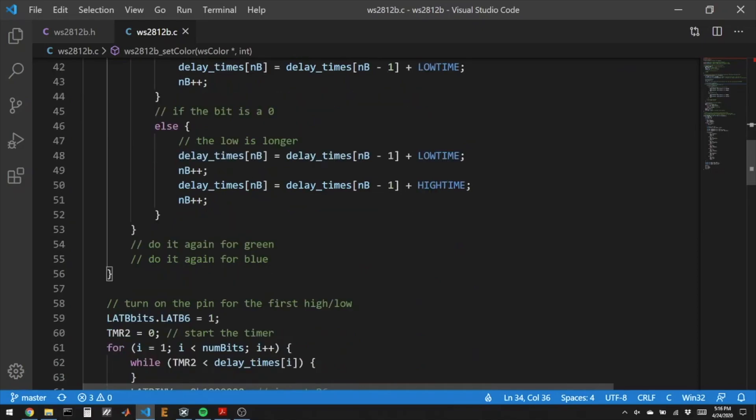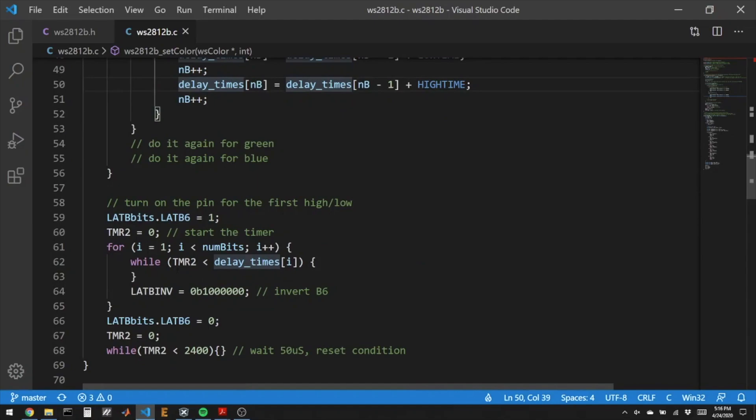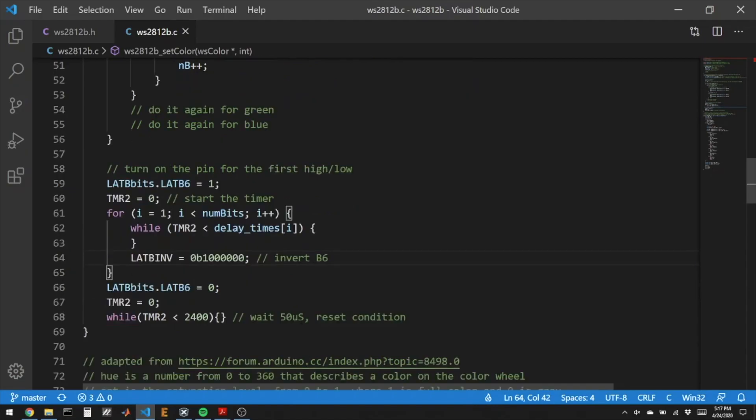Now we've got this array delay times, and we're going to sit inside of another for loop. For the number of bits that we have collected, we're going to wait until that first delay time and invert our pin, wait until the next delay time, invert the pin, delay until the next time, invert the pin, and that will generate the square wave that commands the LED strip.